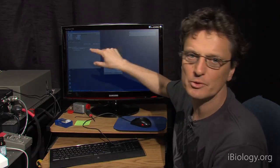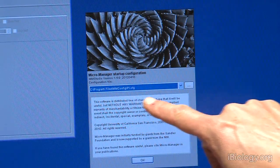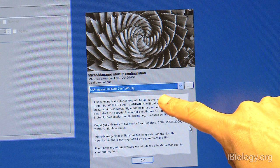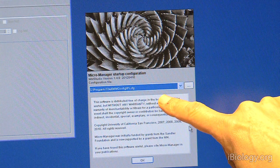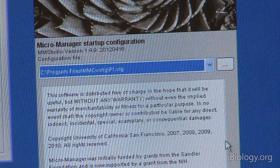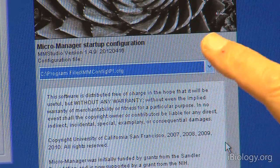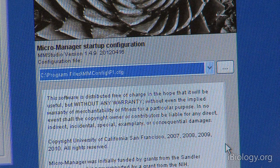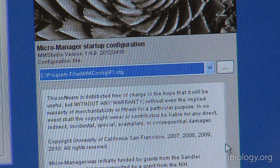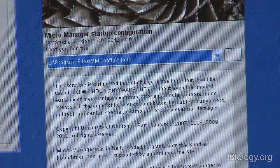However, all the principles of what's going on here is directly applicable to other software packages as well. So, first of all, we need to load a configuration file. And this is a file that tells the software what hardware is connected to the system. And so I've set that up in advance. And in this case we have a Zeiss microscope and an old Princeton Instruments camera. And that's about it.